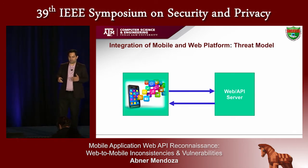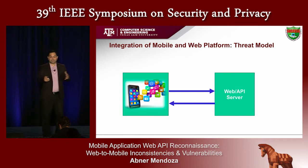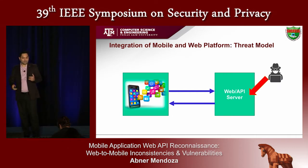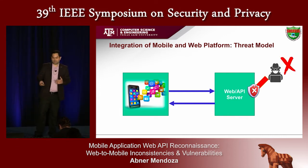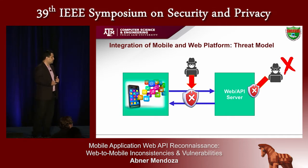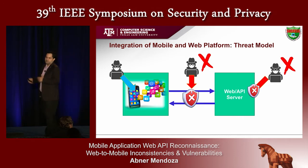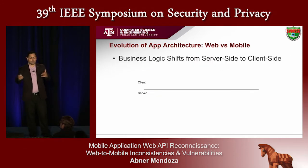If we take a look at the threat model — the attacker capabilities and their perspective on this integration — we can consider that the attacker's goal is to compromise the web server. But obviously that might not be feasible because the web server might have robust defenses. The attacker might also try to intercept communication between the app and the web server, but HTTPS, authentication tokens, and other things might prevent that. But just like any regular user, an attacker has access to the apps, can use them as a legitimate user, and just like a security researcher, can disassemble the app and analyze its inner workings. That might give him some insight into how to ultimately attack the web server.